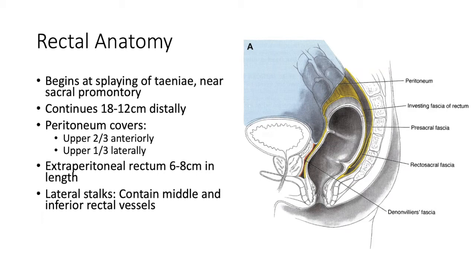In terms of the definition of the rectum, it begins at the splaying of the taenia near the sacral promontory — really the landmark you're looking for is the splaying of the taenia coli. In terms of average length, anywhere from 12 to 18 centimeters; a general average that lots of people quote is about 15 centimeters. In this image, the upper two-thirds of the anterior rectum are peritonealized, seen as that blue hue and reflection. Laterally, it's really only the upper third or so. Posteriorly, it's predominantly extraperitoneal in nature.